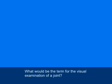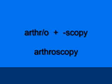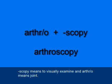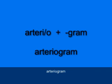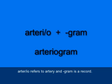What would be the term for the visual examination of a joint? That would be arthroscopy, A-R-T-H-R-O-S-C-O-P-Y. SCOPY means to visually examine, and arthro means joint. What would be the term for a record of an examination of the artery? That would be an arteriogram, A-R-T-E-R-I-O-G-R-A-M. Arterio refers to artery, and gram is a record.